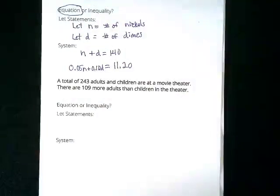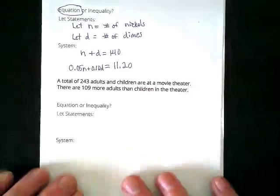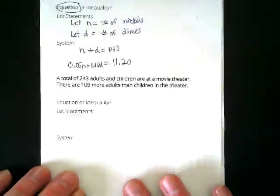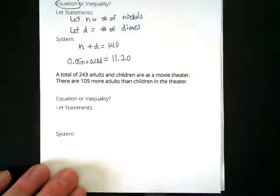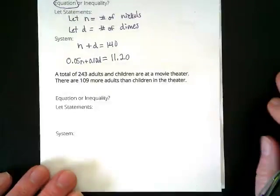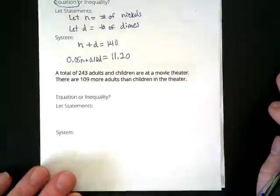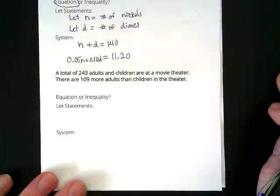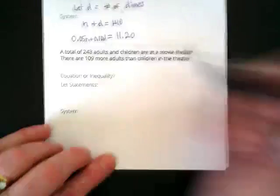Yeah. They work together. Do you guys see what we're talking about here? Let's try the second one. Who else was willing to read? Go ahead, Lehman. A total of 243 adults and children are at a movie theater. There are 109 more adults than children in the theater.